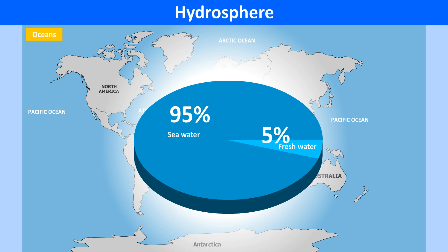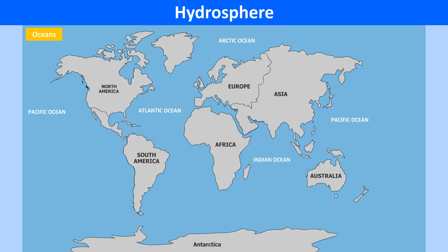Nearly 95% of all water is in the oceans and seas and it is salty. Only 5% is available as fresh water. Apart from the four major oceans — the Pacific, Atlantic, Indian and Arctic — many geographers call the waters surrounding Antarctica as the Southern Ocean. It is the place where the waters of the Pacific, Atlantic and Indian oceans merge.